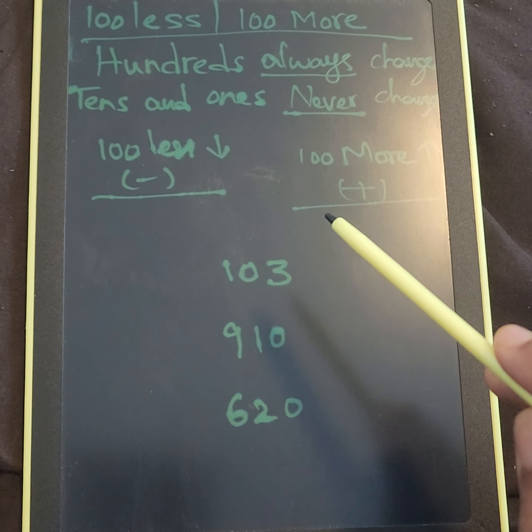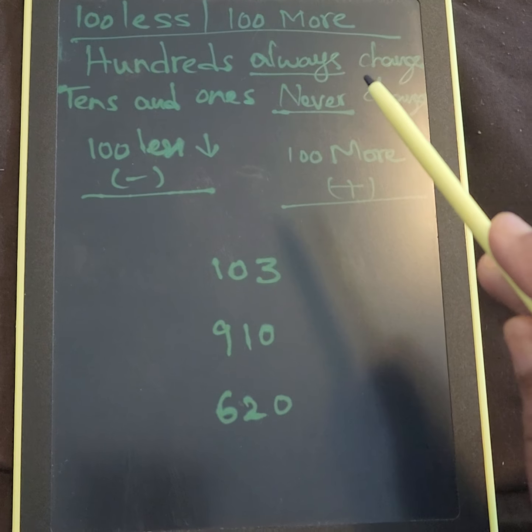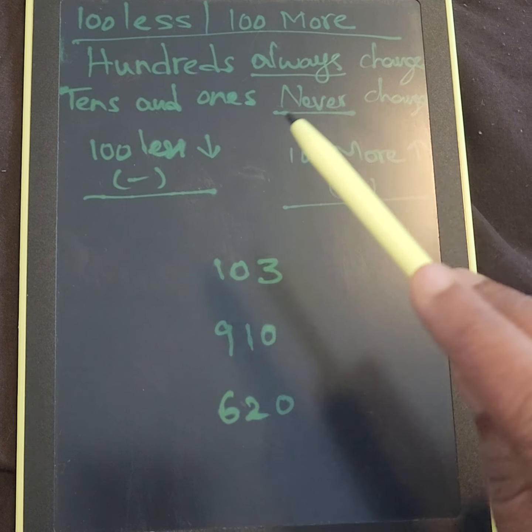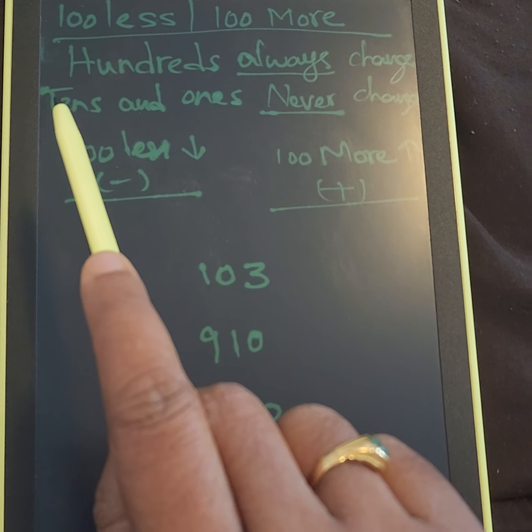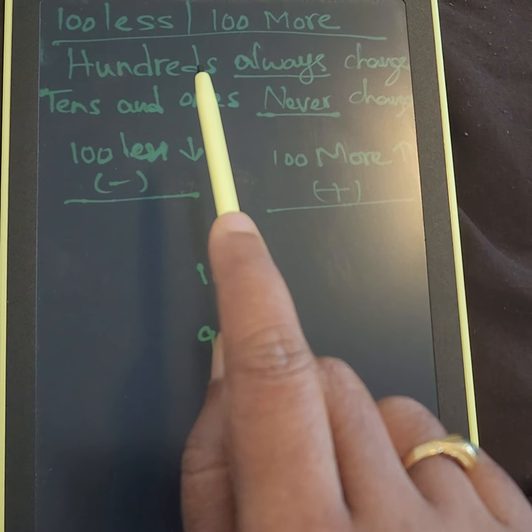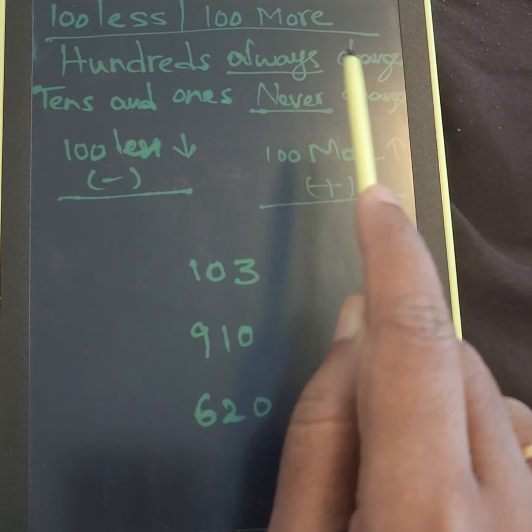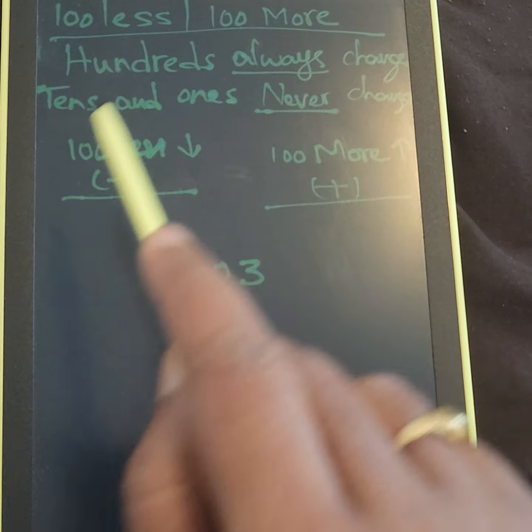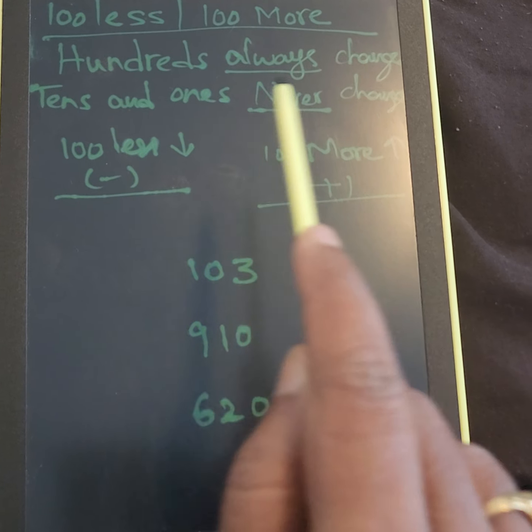Hundred more, we have to add hundred to the given number. Here the simple rule is: hundreds place value always changes in the hundred less and hundred more. Tens and ones place never change.